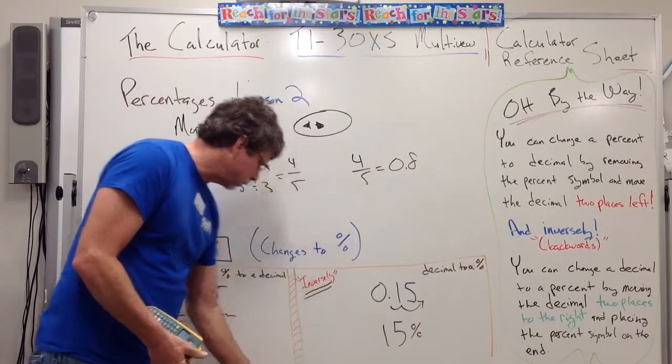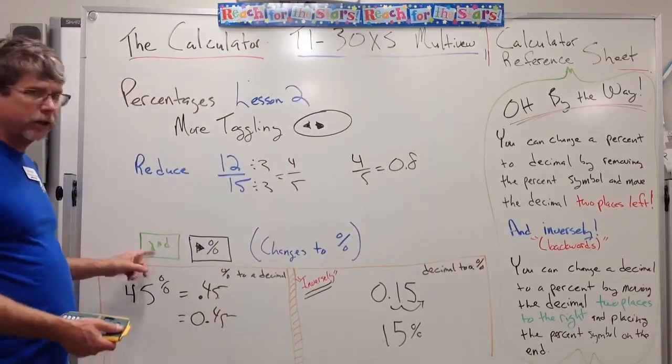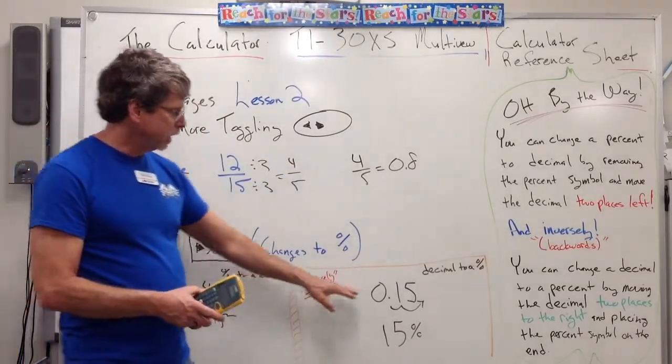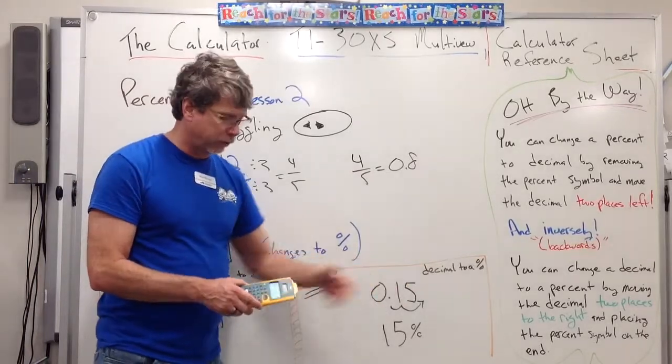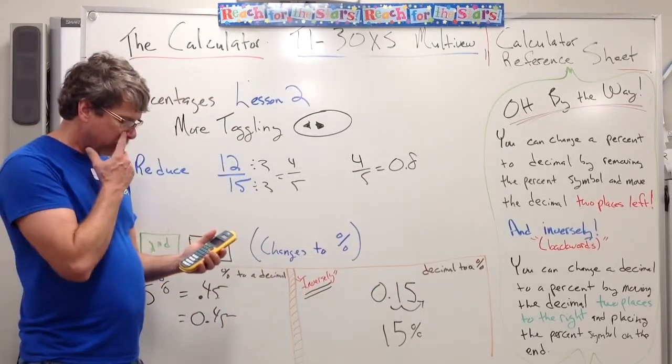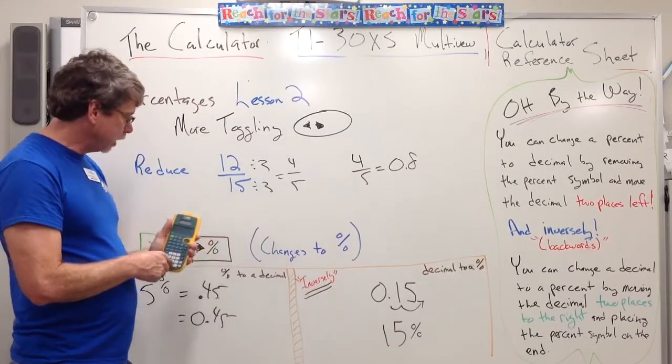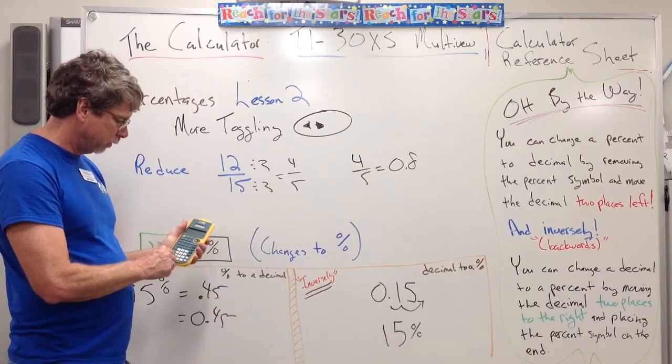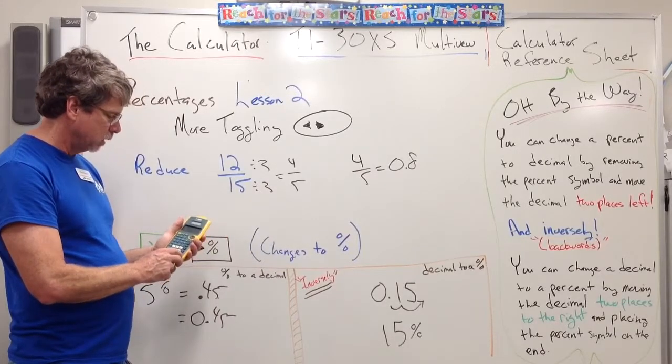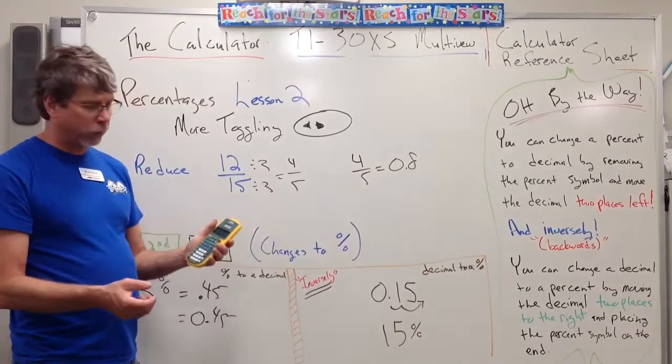Again, you can toggle that. There is a go green for that as well. So if I want to change a decimal to a percent, we can do that by, again, typing in the decimal, 0.15. Hit enter, it stays at 0.15.